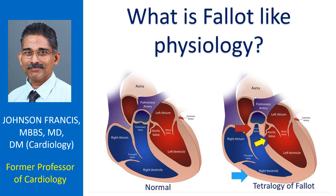These patients can develop hypercyanotic spells and cerebrovascular accidents, while they seldom go into heart failure — unlike cyanotic congenital heart diseases with increased pulmonary blood flow. Chest X-ray shows pulmonary oligemia and cardiac size is seldom enlarged.